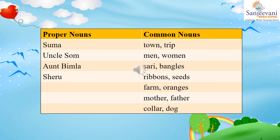'Uncle Soma bought seeds for his farm.' Uncle Soma is a proper noun; since we have already written it, we will not write it again. Seeds is a name of a thing — we use seeds to grow plants — so seeds is a common noun. We will write seeds in the common noun column. Farm is a name of a place, hence farm is also a common noun.